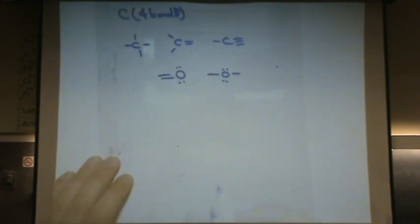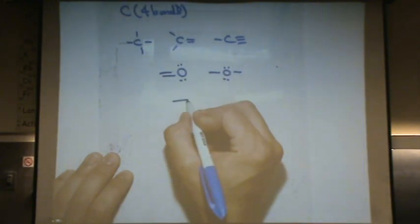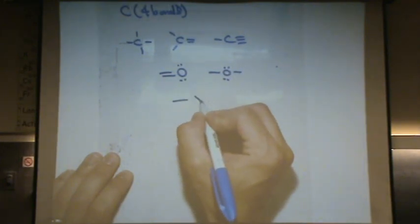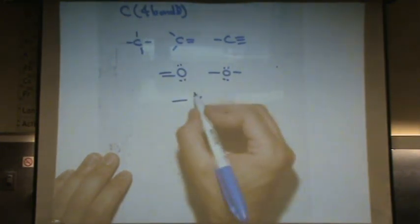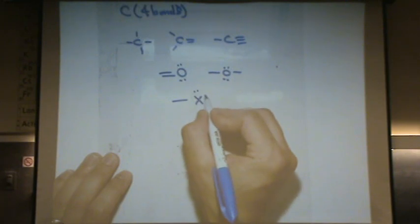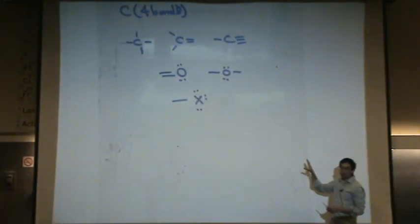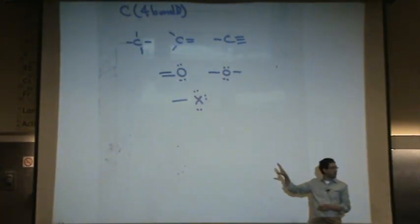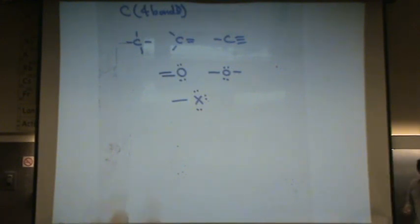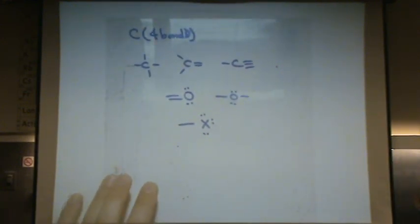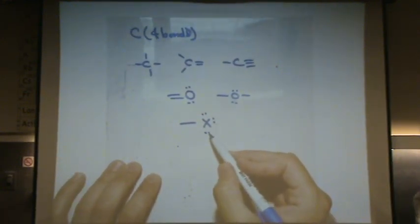A halogen — symbolized by X, so fluorine, bromine, iodine — will always have one bond. These are always neutral formal charges, so when you have a formal charge that's non-zero it will change, but a halogen will always look like this.